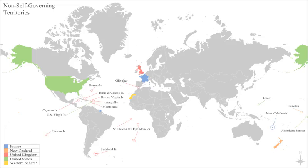The Philippines was previously a colony of Spain from around 1565 to 1898 as part of the Spanish East Indies, then a colony of the United States from 1898 to 1946. It achieved self-governing Commonwealth status in 1935 and full independence in 1946. Somalia was a colony of Italy and Britain from the late 1800s to 1960. On July 6, 1960, the Trust Territory of Somaliland, the former Italian Somaliland, united with the former British Somaliland to form the Somali Republic.